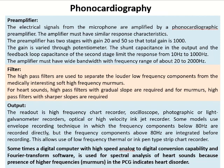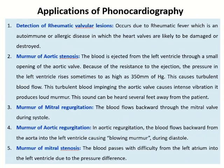Optical or high-velocity inkjet recorders may also be used to analyze the work function of the heart. From the output, you get four types of nodes: S1, S2, S3, and S4. According to the position and intensity of these four nodes, the work function of the heart is analyzed. Sometimes a digital computer with high-speed analog-to-digital conversion capability and Fourier transform software is used for spectral analysis of heart sounds, because the presence of higher frequencies in the PCG indicates heart disorders.